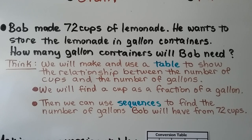Bob made 72 cups of lemonade. He wants to store the lemonade in gallon containers. How many gallon containers will Bob need? We will make and use a table to show the relationship between the number of cups and the number of gallons, and find a cup as a fraction of a gallon. Then we can use sequences to find the number of gallons from 72 cups.